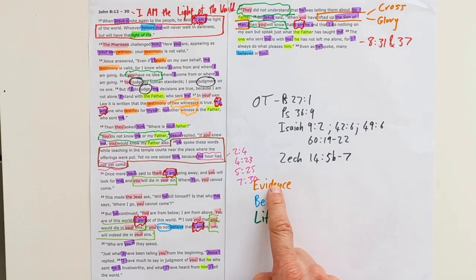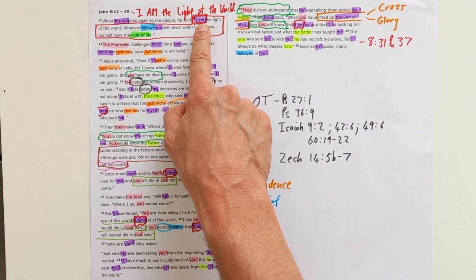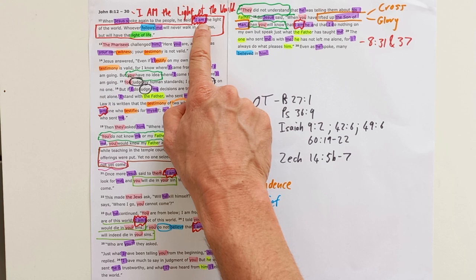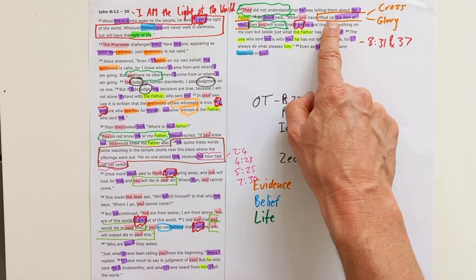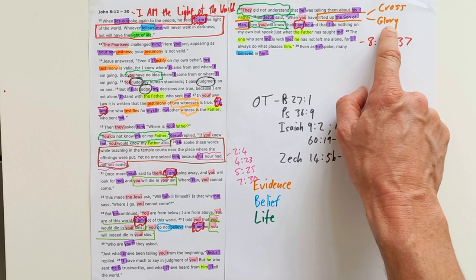So Jesus is saying one day all the evidence will make it absolutely clear that he is indeed the light of the world, he is God with us. And the evidence will become absolutely clear when Jesus lifted up on the cross and lifted up to his throne in glory.